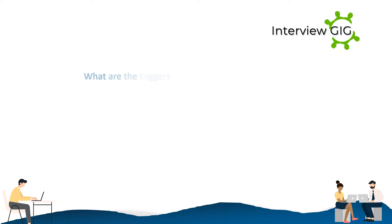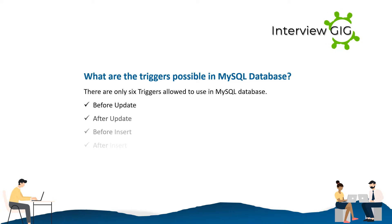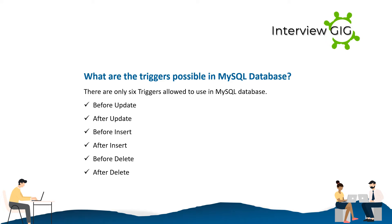What are the triggers possible in MySQL database? There are only 6 triggers allowed to use in MySQL database: Before Update, After Update, Before Insert, After Insert, Before Delete, After Delete.